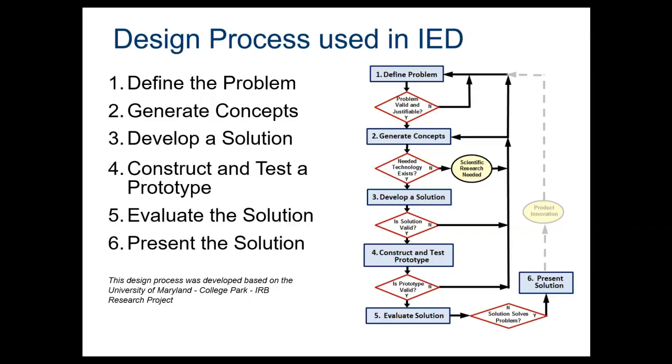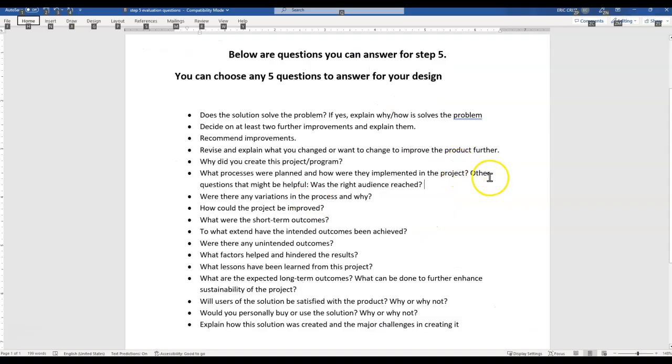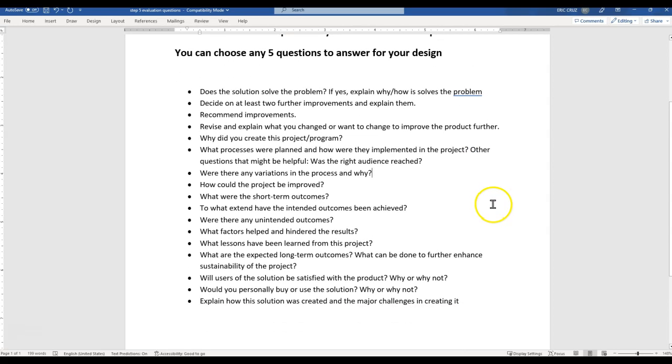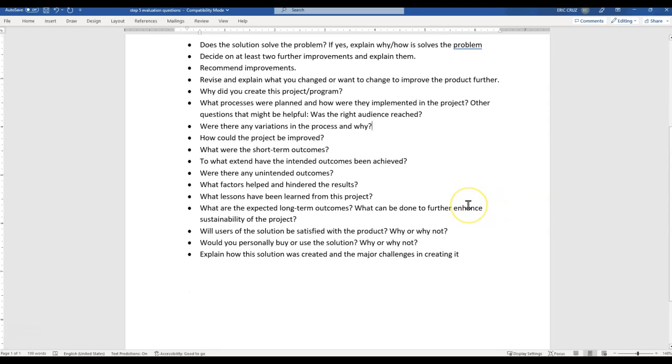So for step five, I can provide you with a list of engineering evaluation questions. Let me show you that list. So these are five evaluation questions that you can use on any design process. If you need this and it's not in your binder right now, ask me for a copy for you to keep inside of your binder.